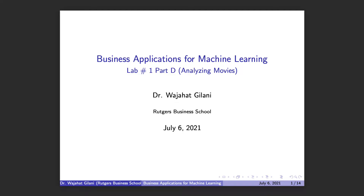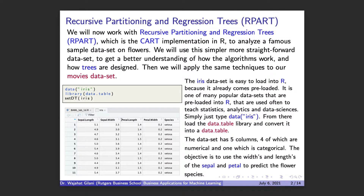Ladies and gentlemen, it's Part D of our lab analyzing movies using classification and regression trees, CART. Now we're going to start using the rpart package — the recursive partitioning regression trees package — to do our tree analysis, our CART analysis. Remember, rpart is the CART implementation in R, but it's essentially doing the same thing. We want to use this rpart package to start doing our analysis on our movie data.